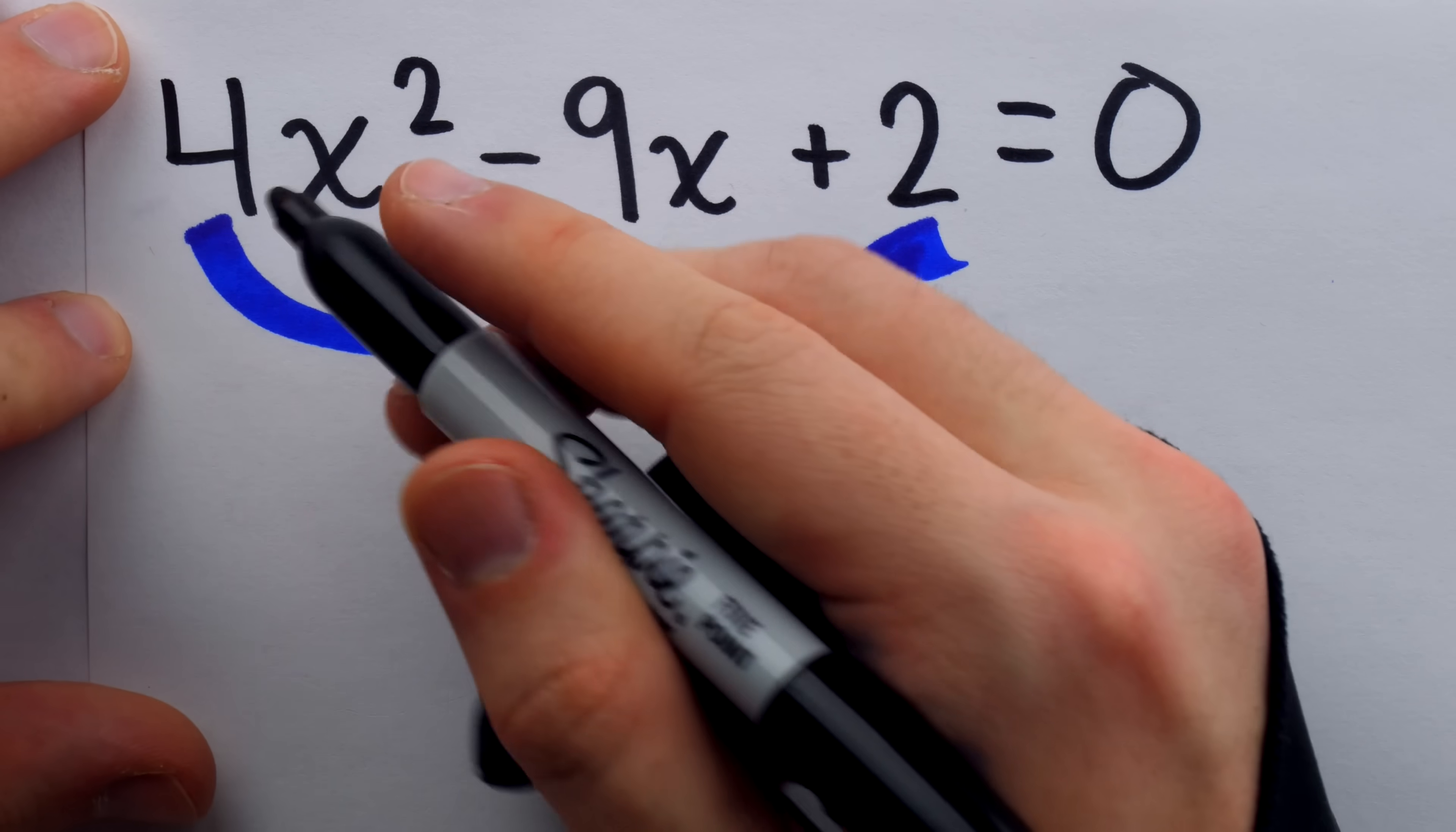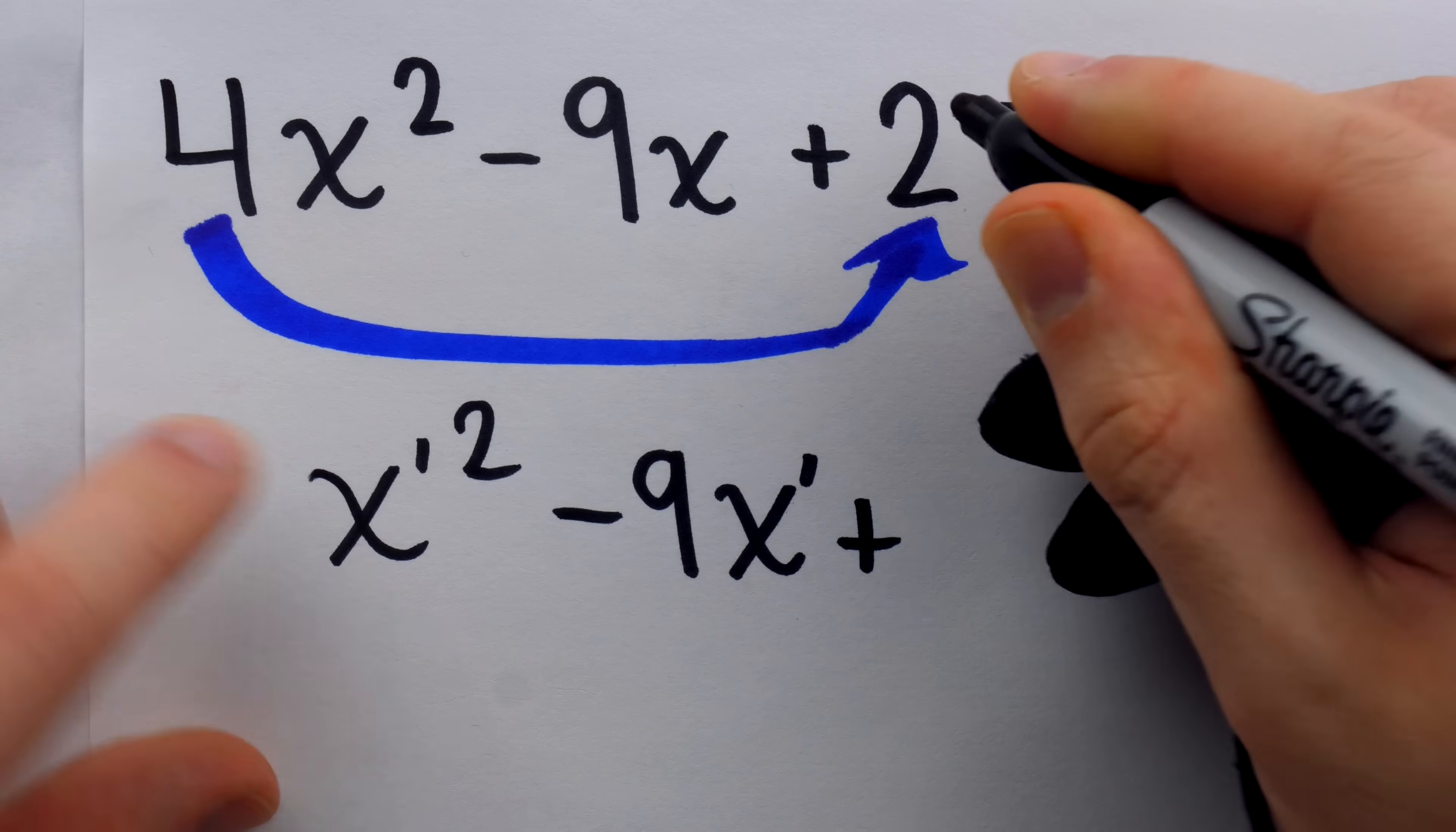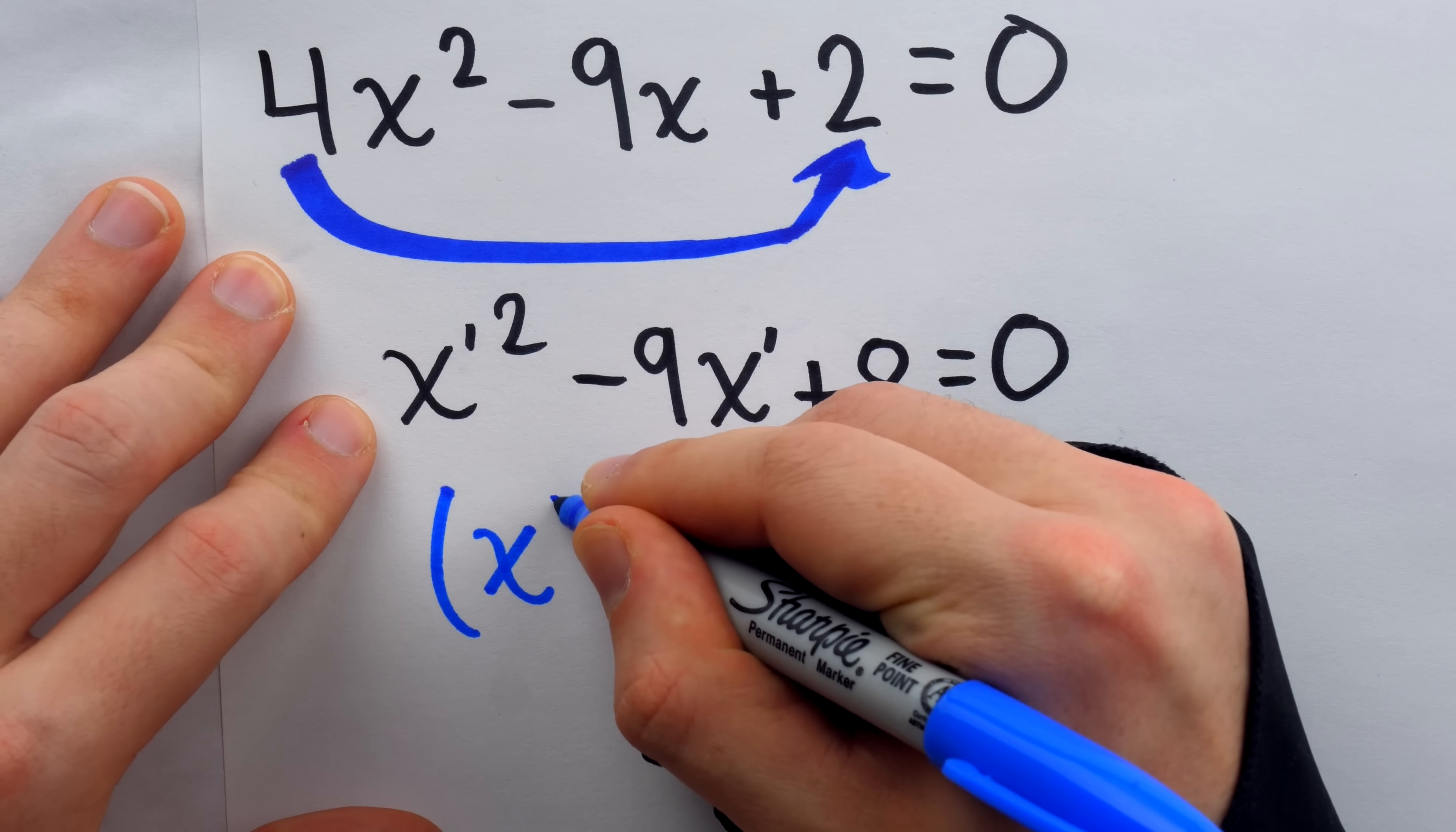Now we get to use a leading coefficient of 1, but we want to be careful to make sure that we understand the variable now is different. Let's call it x prime. So x prime squared minus 9x prime plus 2 times that leading coefficient of 4, so plus 8 equals 0. And then we just factor this bad Larry, which is cake city, frankly. This is very easy to factor.